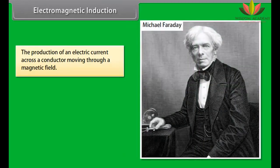Electromagnetic Induction. The production of an electric current across a conductor moving through a magnetic field is called electromagnetic induction. For example, generators, transformers, induction motors, electrical motors, synchronous motors, and solenoids all use electromagnetic induction.